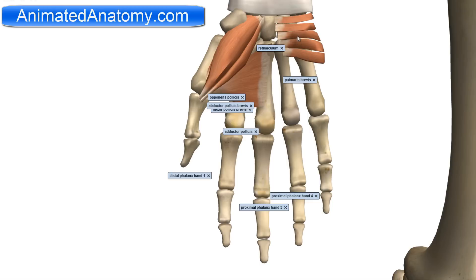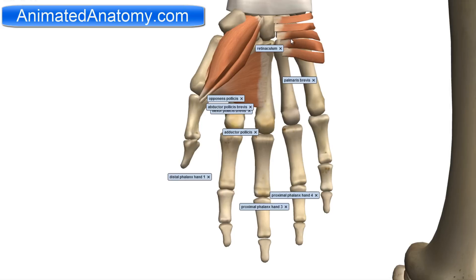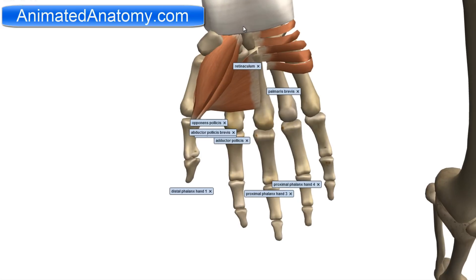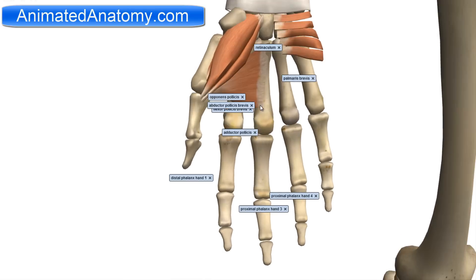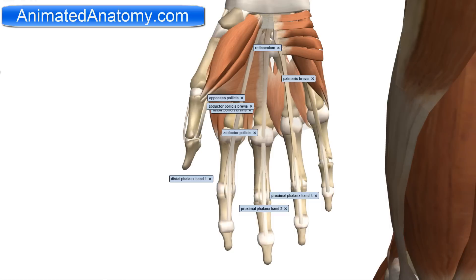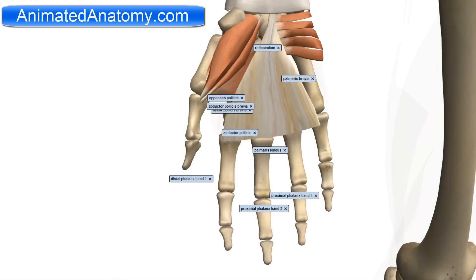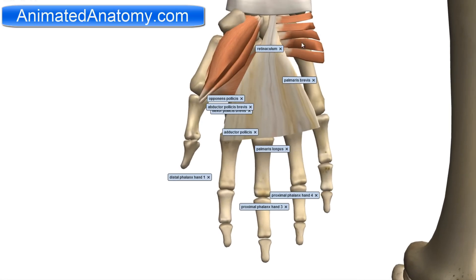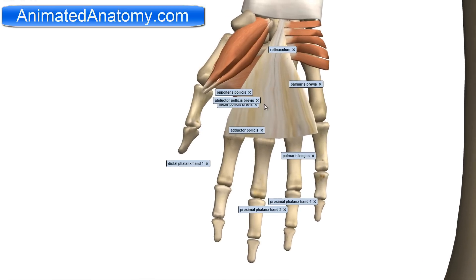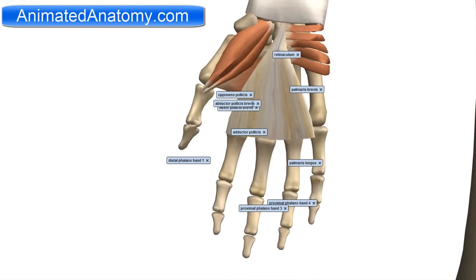Here is the palmaris brevis. It is the first muscle in the medial compartment. It has the origin on the flexor retinaculum and also on the palmar aponeurosis, shown here. The insertion is on the palm. It is innervated by the superficial branch of the ulnar nerve and has a very simple function: it serves to wrinkle the skin of the palm.